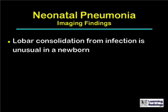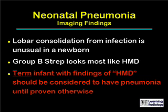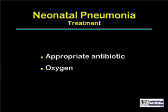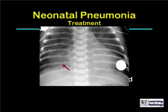Lobar consolidation, a hallmark of pneumonia in an adult, is unusual in a newborn. Group B strep looks the most like hyaline membrane disease, but if you have a term infant with imaging findings that resemble hyaline membrane disease, the infant should be considered to have pneumonia until proven otherwise. Treatment includes the appropriate antibiotic, oxygen, and fluid support as needed.